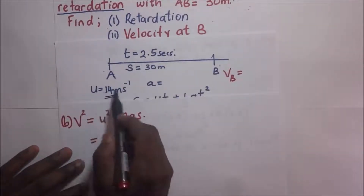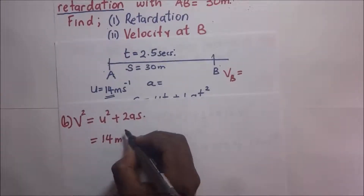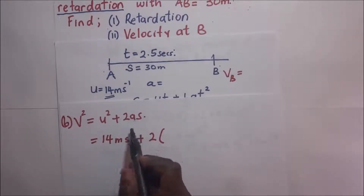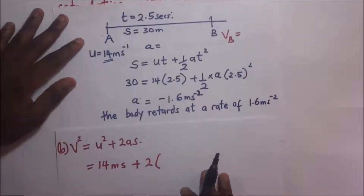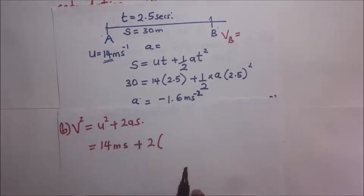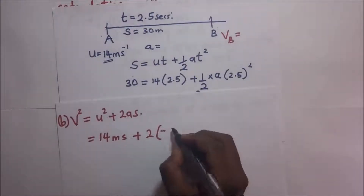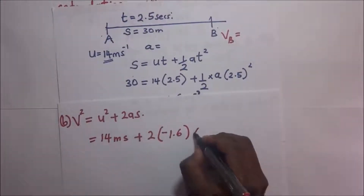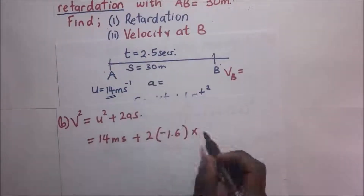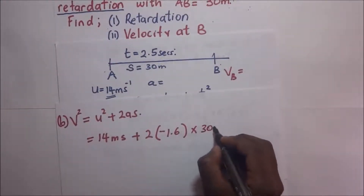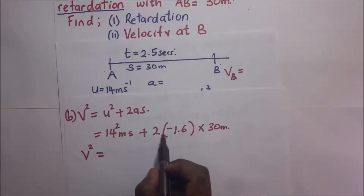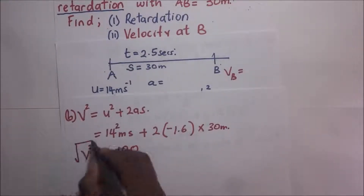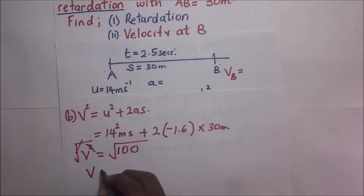Our initial velocity is 14 meters per second, so: v² = 14² + 2 × (−1.6) × 30. We have to respect the negative sign since it is a retardation. So it's 196 plus 2 times negative 1.6 times 30, which gives us 100. Finding the square root on both sides, the velocity at B is 10 meters per second.